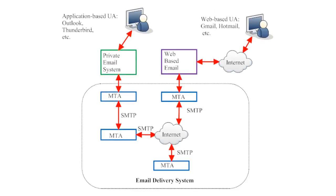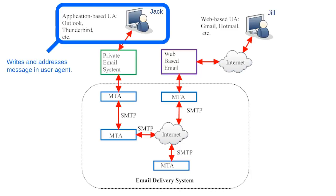Let's examine an illustration that summarizes the basic parts of an email system. For now, let's pretend that an email message is moving from left to right. The sender is the user on the left and the recipient is the user on the right. To help us talk about these users, let's give them names — I'll call the user on the left Jack and the one on the right Jill.